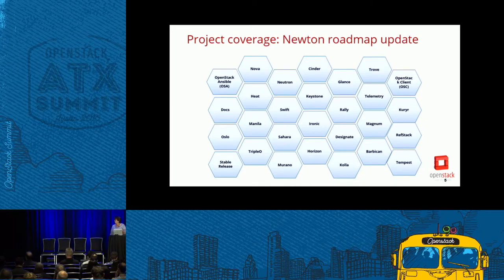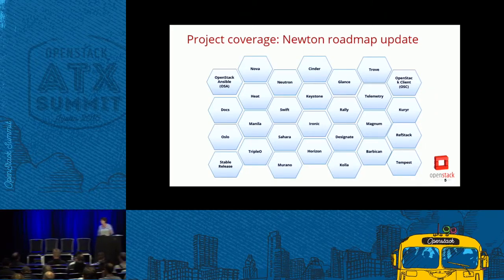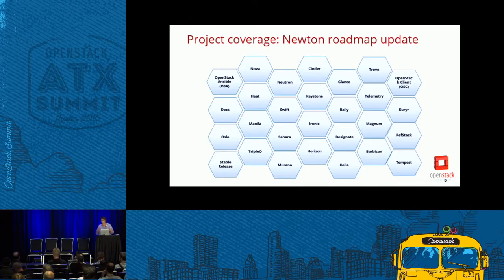In this release, we're covering 28 projects — up from 22 in the last release and 17 from the first time we did this in Vancouver. We're seeing steady growth in the breadth of projects we can communicate future releases around, and we're also seeing project teams talking more and earlier about what they're going to do. So in all, we're getting better as a community about projecting where we're going to go.